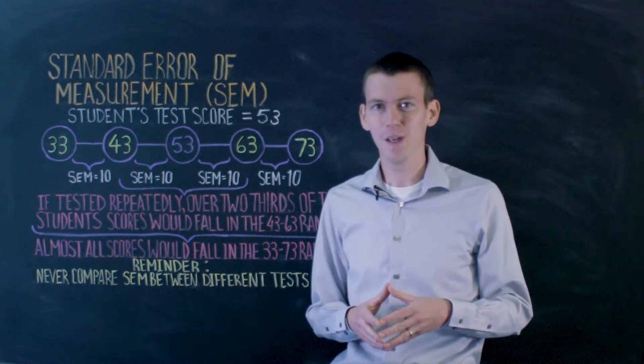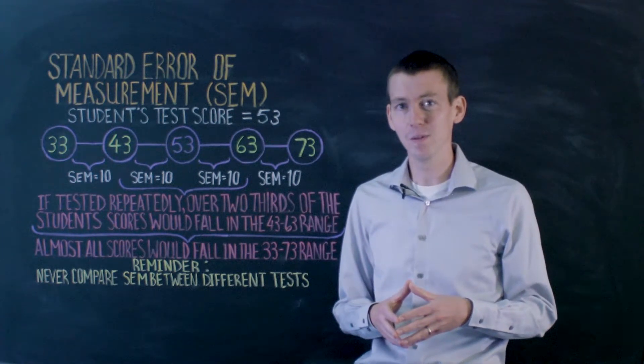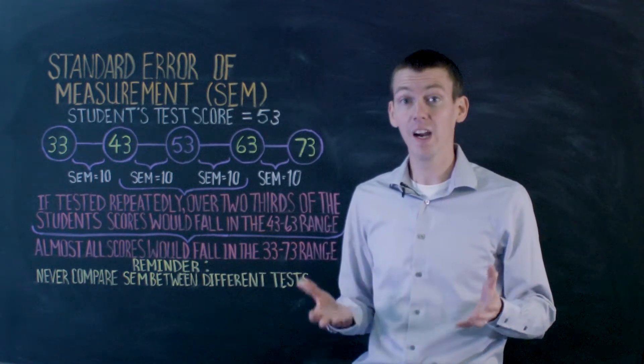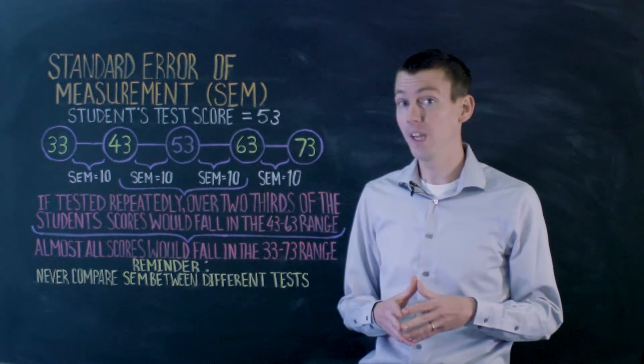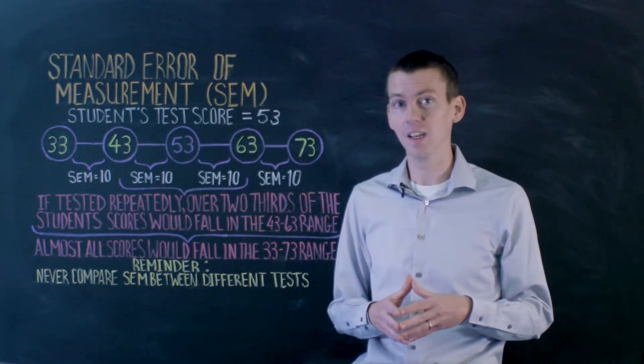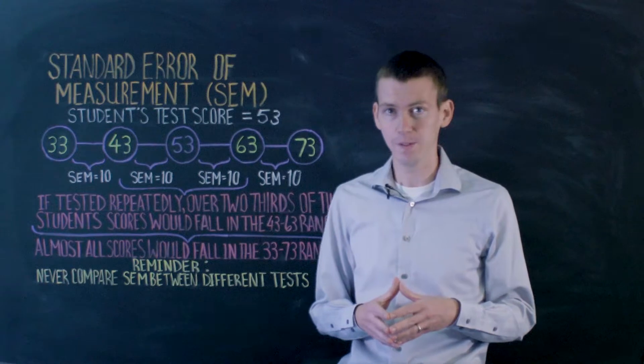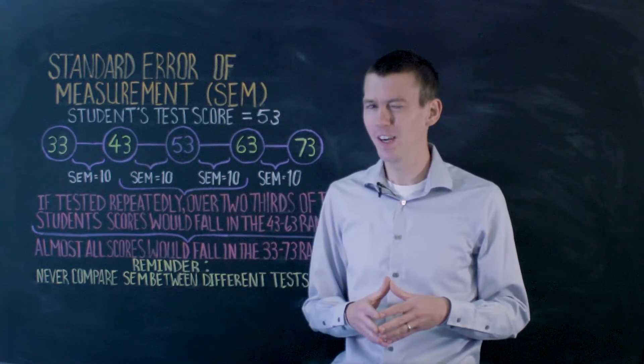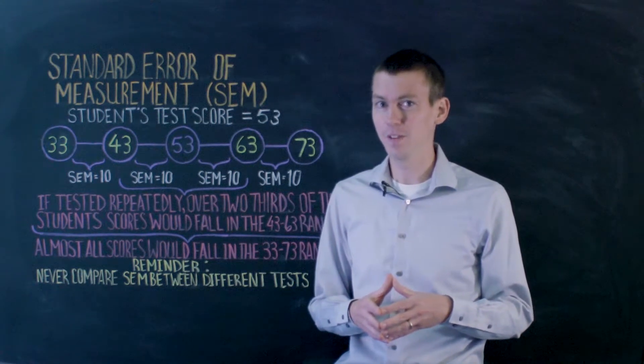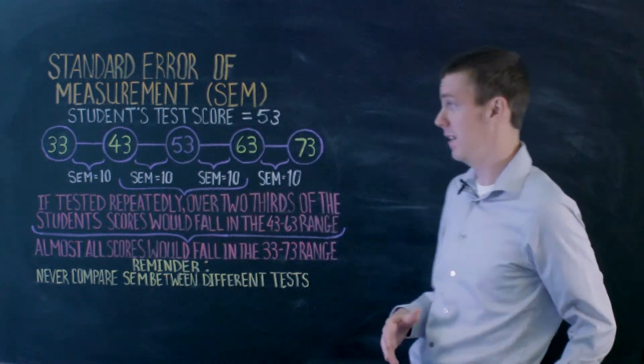Because there's so many different factors that impact the test scores that students get, we can't control error and completely remove it. But what we can do is we can quantify it using a concept called the standard error of measurement. Let's figure out what the standard error of measurement does and what it allows us to say about test scores.